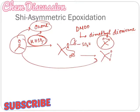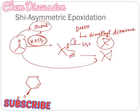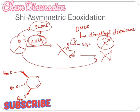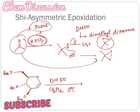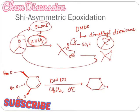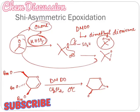Now I will show an example where DMDO is used as an epoxidizing reagent. The substrate is treated with DMDO in dichloromethane solvent under 0 degree Celsius temperature. This gives the epoxide product.